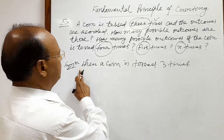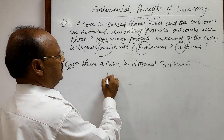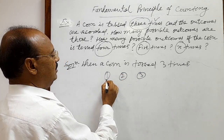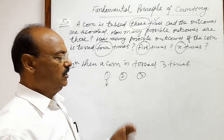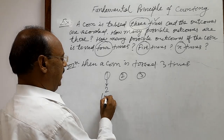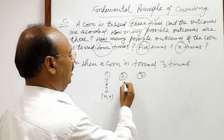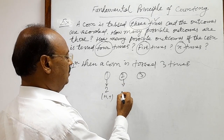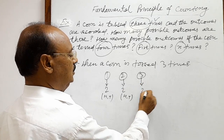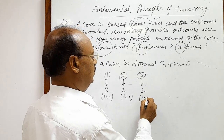So in this case, the coin is being tossed three times. Suppose this is the first time, second time, and third time. Whenever the coin is tossed the first time, two outcomes are possible — either head or tail. Similarly, when the coin is tossed the second time, again there are two possible outcomes — head or tail. Similarly, for the third time also, two possibilities: either head or tail.